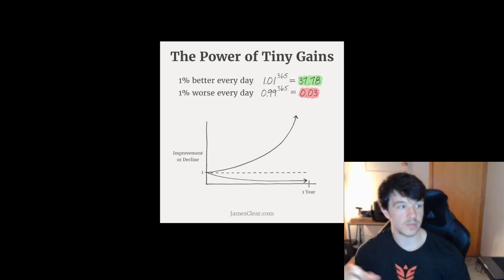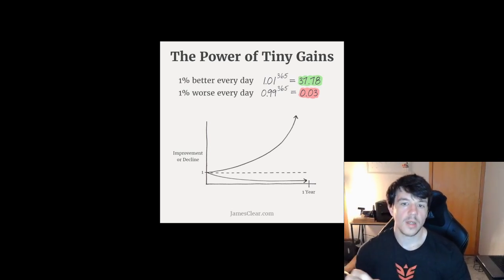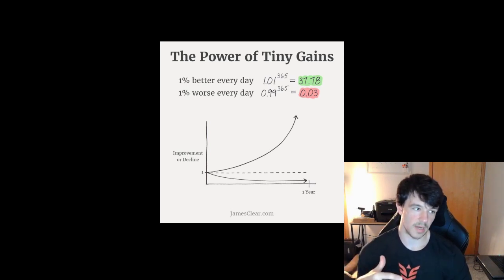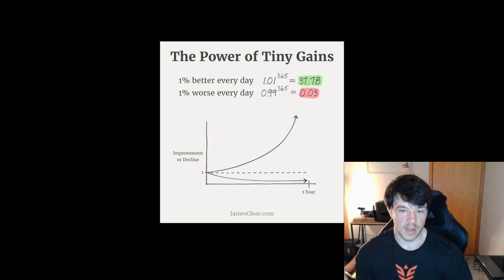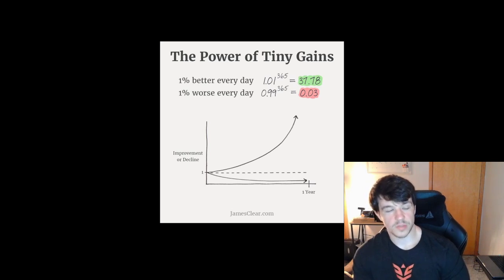So the first thing we're going to talk about is the power of tiny gains or the 1% improvement rule. If you can see the math, there's math for doing 1% better at something every day and there's math for doing 1% worse every day or slowly decaying. The dotted line in the graph is if you just stayed the same, stayed stagnant. You can see if you get 1% worse every day, you slowly start to decay towards zero.